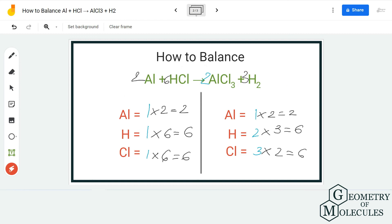We have 2Al plus 6HCl on the reactant side, 2AlCl3 and 3H2 on the product side.